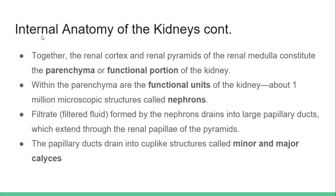Together, the renal cortex and the renal pyramids of the renal medulla constitute the parenchyma, or functional portion, of the kidney. Within the parenchyma are the functional units of the kidney — about one million microscopic structures called the nephrons.